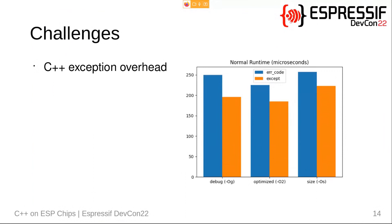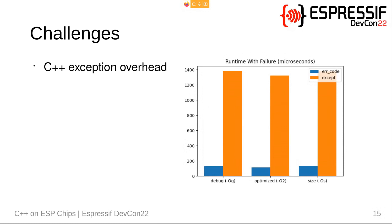If we look at the normal runtime — when no error is reported — the version using exceptions is slightly faster than the version using error codes, because return values do not have to be checked; checking return values in the error-code version takes additional time. If we do throw an exception, however, the difference is significant: throwing an exception takes more than one millisecond of overhead, dominated by throwing the exception, unwinding the stack, and restoring execution at the catch block. The error-code version runtime is still dominated mostly by the calculation, since returning an error code is just a few instructions.